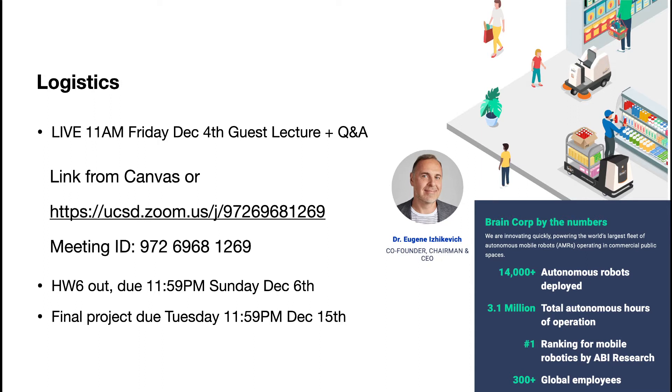I want to remind everybody that next week on Friday, December 4th, is going to be our guest lecture. Eugene Izhekevich, who's the CEO of Brain Corporation, is going to be talking with us. Brain Corp is a giant autonomous robots mega-machine company. They build all kinds of commercial robots for logistics and for cleaning, and they have a pretty interesting operation.